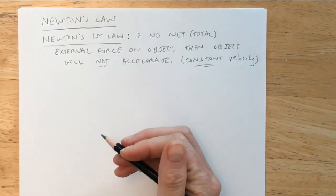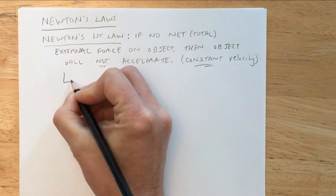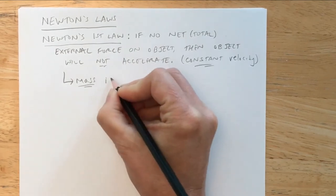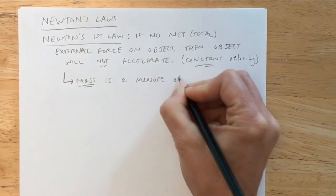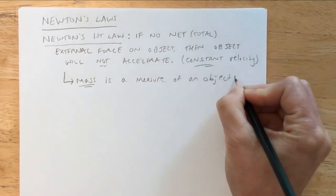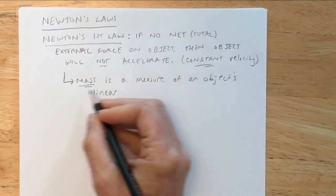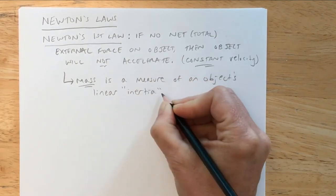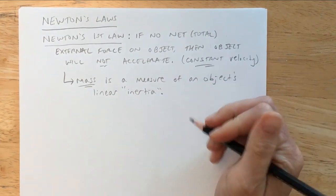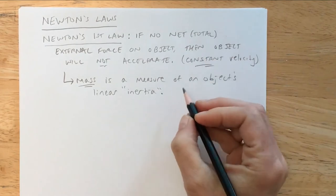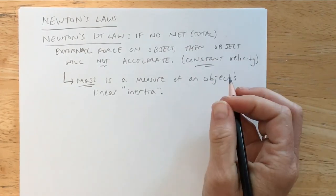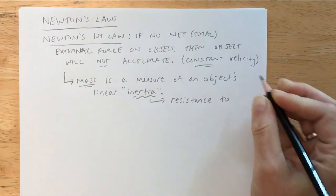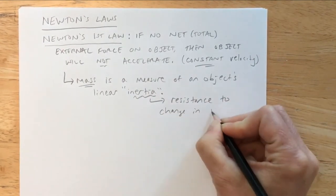Related to Newton's first law is the idea of mass and inertia. Mass is a measure of an object's linear inertia. Inertia is really just an object's desire to follow Newton's first law — it wants to keep a constant velocity. So inertia is the resistance to a change in velocity.